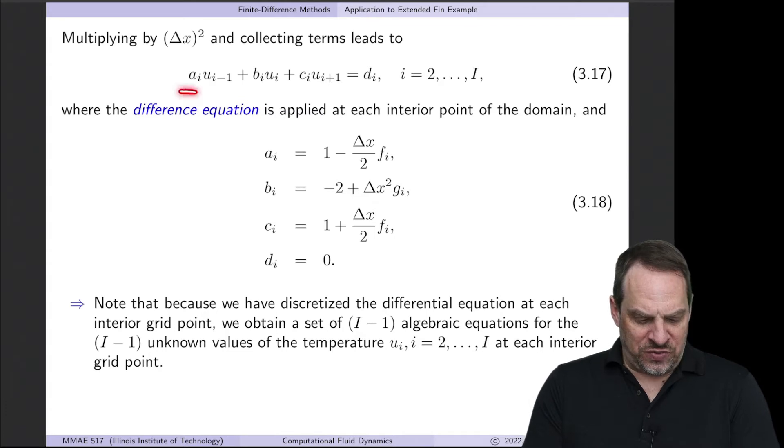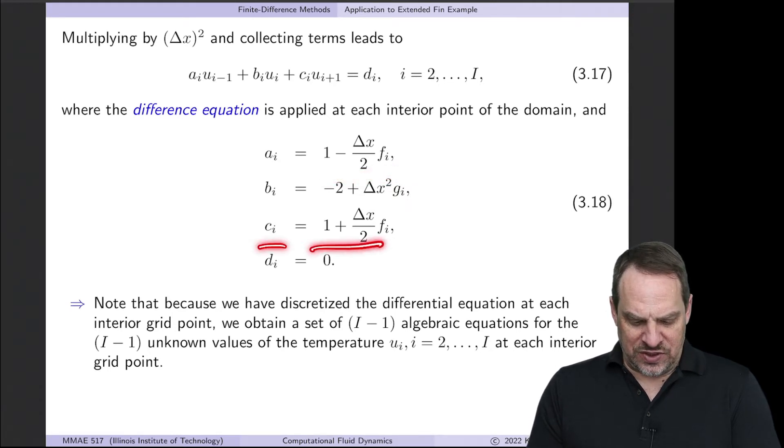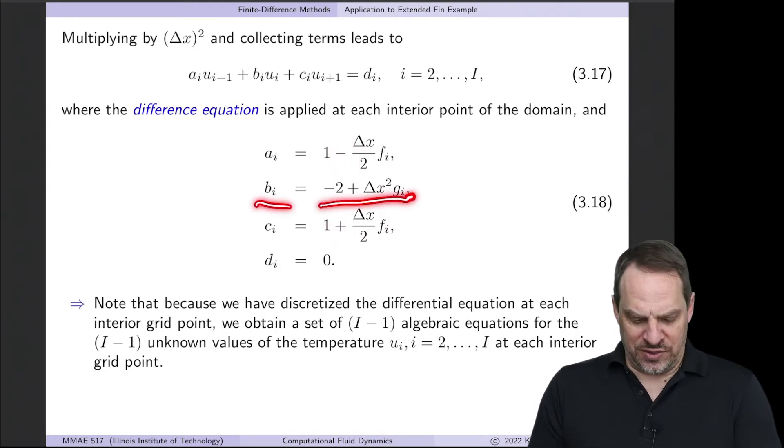So we have a coefficient times ui minus 1, plus a coefficient times ui, plus another coefficient times ui plus 1, and then the right-hand side coefficients. So a, b, c, and d. d, the right-hand side, is just zero in this case. a, everything times ui plus 1, is 1 minus delta x over 2 times f sub i. c is the same thing, but with a plus sign instead of a minus sign. And b is minus 2 plus delta x squared times g sub i.